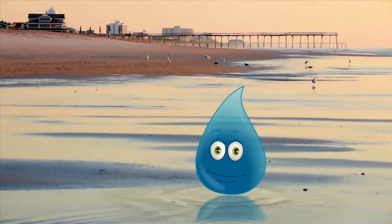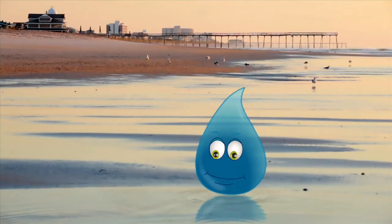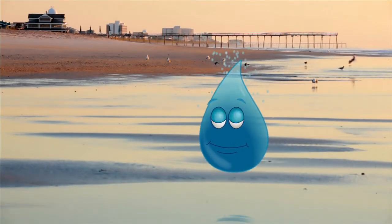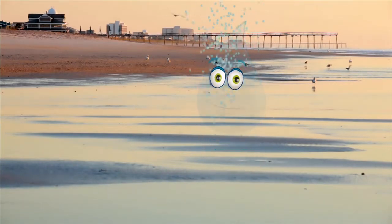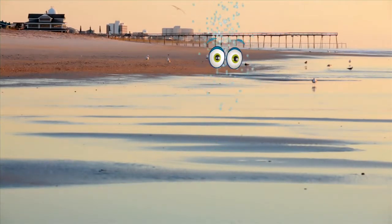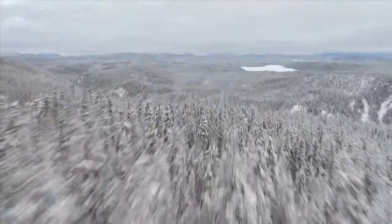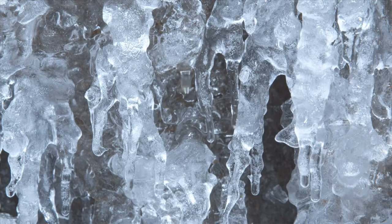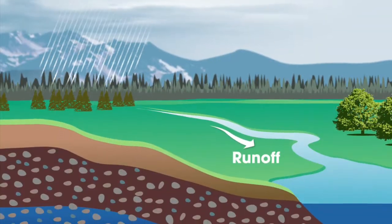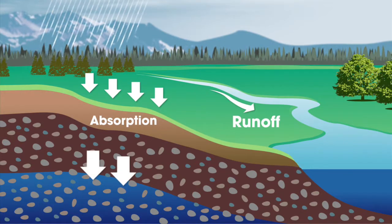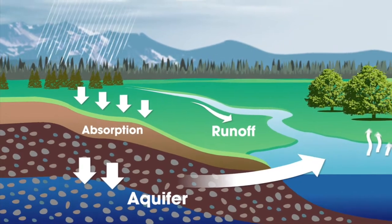As the water returns to the surface, things get interesting depending on where it lands. If you land in the ocean, you will eventually evaporate and return to the clouds. But if it lands on a high mountain, it will freeze. When snow and ice melt, the water either runs off into a stream or is absorbed into the ground. That water collects far beneath the surface — we call that layer of groundwater an aquifer.